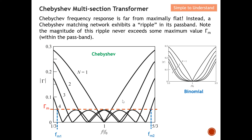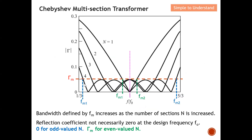From the diagram, this is the Chebyshev response and this is the binomial. For binomial, the passband is quite flat, but for Chebyshev you can see ripple in the passband. This is the trade-off. And if you compare the same number of sections, Chebyshev will have a larger bandwidth compared to binomial.